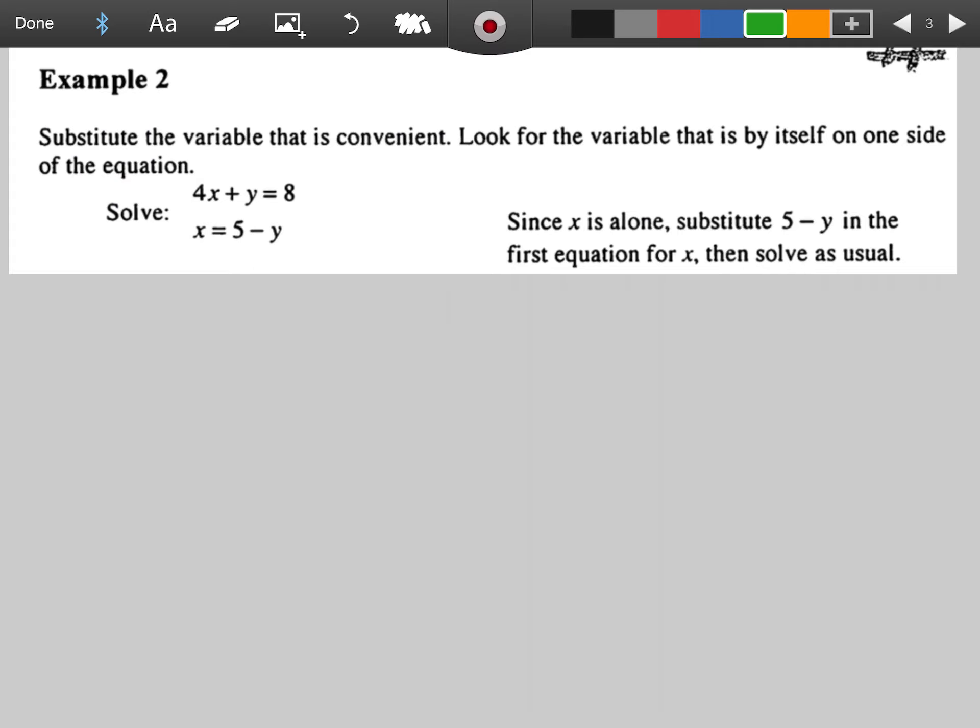For example 2, substitute the variable that is convenient. Look for the variable that is by itself on one side of the equation. And this is already kind of building into what we saw. We're looking for variables that are already isolated out of the two equations that we have. Seen here, since x is alone, we can substitute 5 minus y in the first equation for x, then solve as usual. So that's pretty easy. So instead of x from the first equation, I'm now putting in this 5 minus y. And then I'm eventually going to add on the y because that was part of this equation up here.